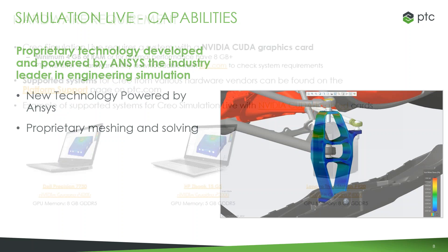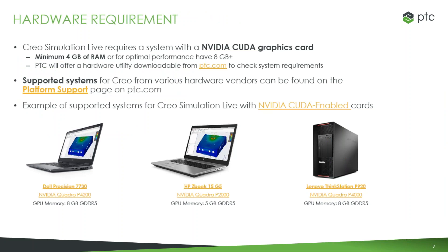The reason this can run so quickly is that it runs on the GPU instead of the CPU. There are some hardware requirements: an NVIDIA CUDA graphics card is required to run Creo Simulation Live, with a minimum of 4 gigabytes of RAM on your GPU, though 8 gigabytes is better.